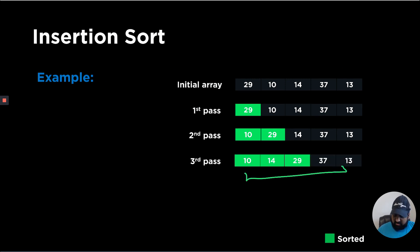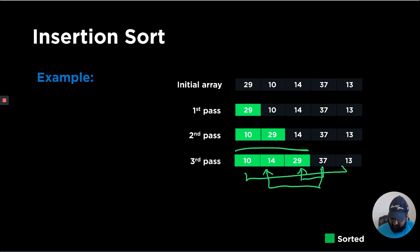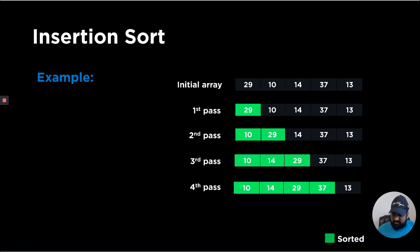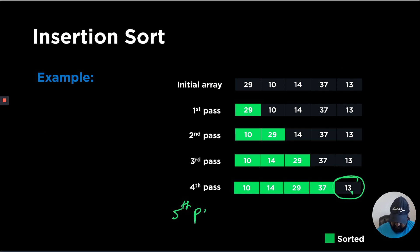Next, we insert 37 at its correct position. We compare 37 with 29, and since 37 is greater than 29, we don't need to compare further — we have found its correct place and the sorted region is already sorted. So 37 joins the sorted region. Finally, we insert the last remaining number, 13, at its correct position. At the end of the fifth pass, the sorted array looks like 10, 13, 14, 29, and 37.